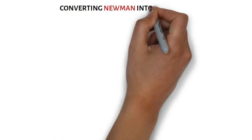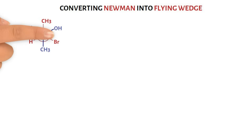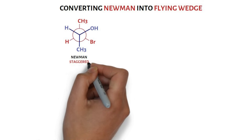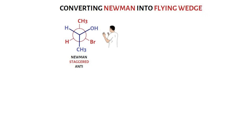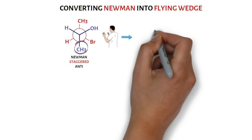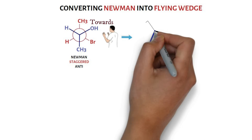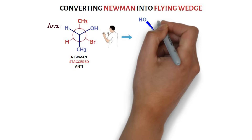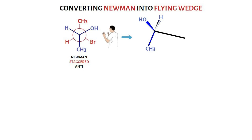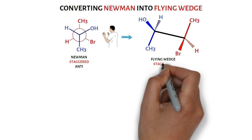Let us discuss the conversion of Newman projection into flying wedge projection. Consider this staggered Newman projection. Look at the molecule from the right or left side and draw the two carbons. If you look from the right side, the front carbon is now on your left and the back carbon on your right. On the left carbon, the methyl points down and is written in the plane of paper pointing down; the hydroxyl group comes towards you and is written on a solid wedge; hydrogen goes away from you and is written on dashes. On the right carbon, methyl points up and is written in the plane of paper pointing up; bromine comes towards you and is written on a solid wedge, whereas hydrogen goes away from you and is written on dashes. This makes the staggered flying wedge projection.